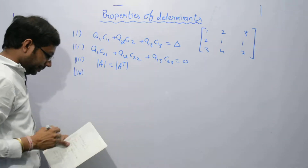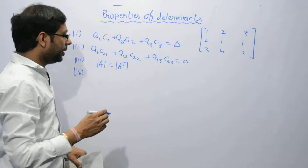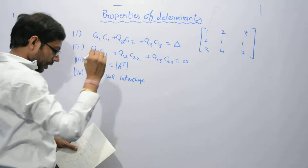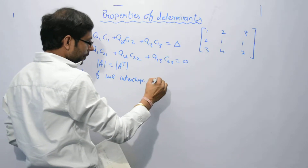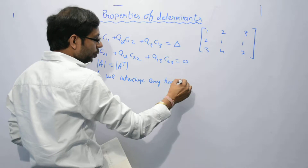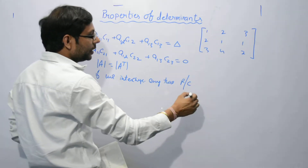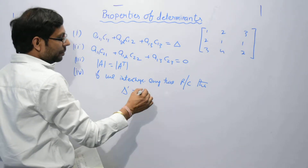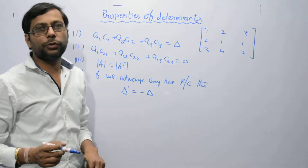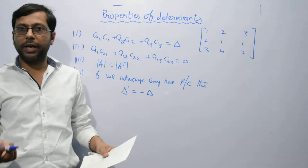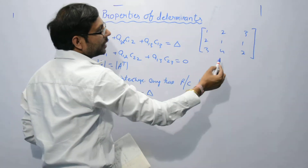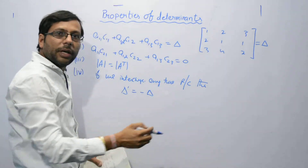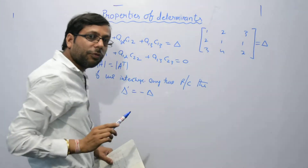The fourth property is: if we interchange any two rows or columns, then the new determinant will be the minus of the previous one — the negative of the old determinant. So if that determinant is delta, and we apply the operation R1 interchange R2, then the new determinant will be negative delta.